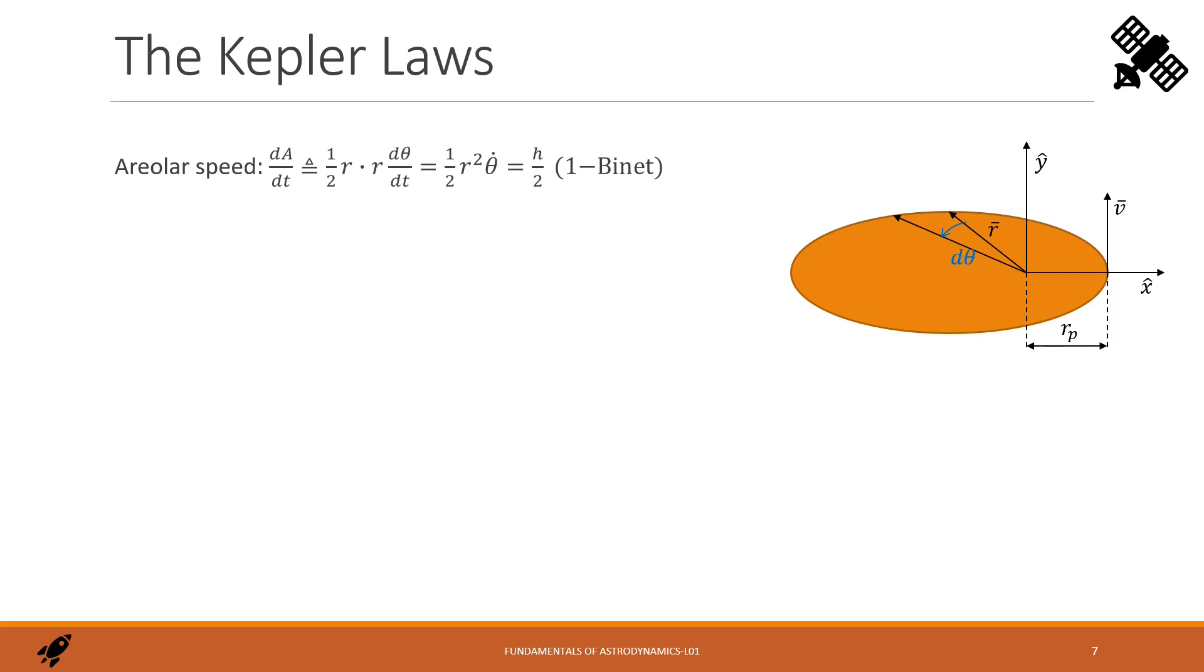The second says about the areal speed. The areal speed is defined as the orbital area covered by the celestial body over the time. The elementary area is defined as one half of r times r into theta dot. But this is actually the half of the angular momentum thanks to the first Binet formula. Since h is constant over the orbit, we have demonstrated that the areal speed is constant.